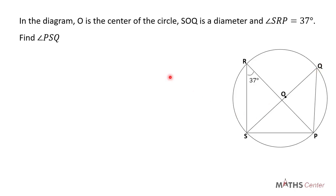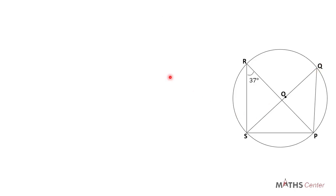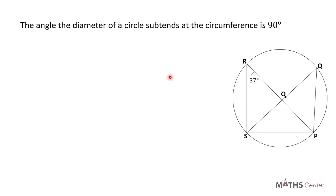Let's start with the solution. We know that in a circle, the angle the diameter of the circle sustains at the circumference is 90 degrees. This is one of the theorems of a circle.